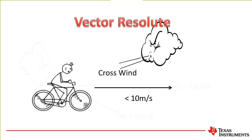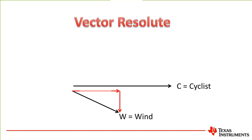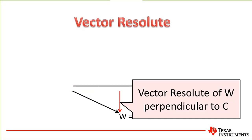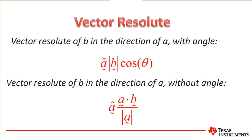If we've got the cyclist as vector C and the wind as vector W, we can break that up into components. The vector resolute of W in the direction of C is that first arrow. The vector resolute of W perpendicular to C, which is often asked, is the other component. The formula for the vector resolute of B in the direction of A is shown at the bottom.